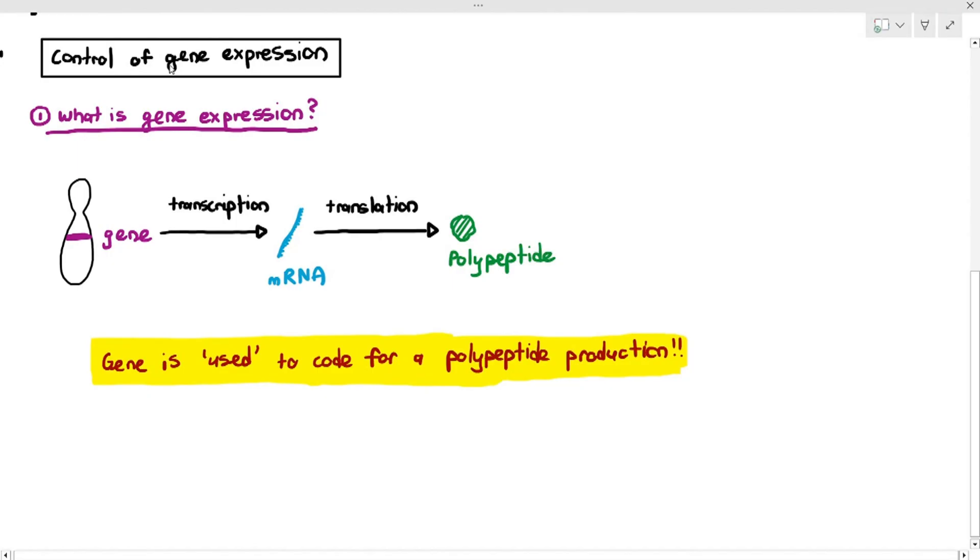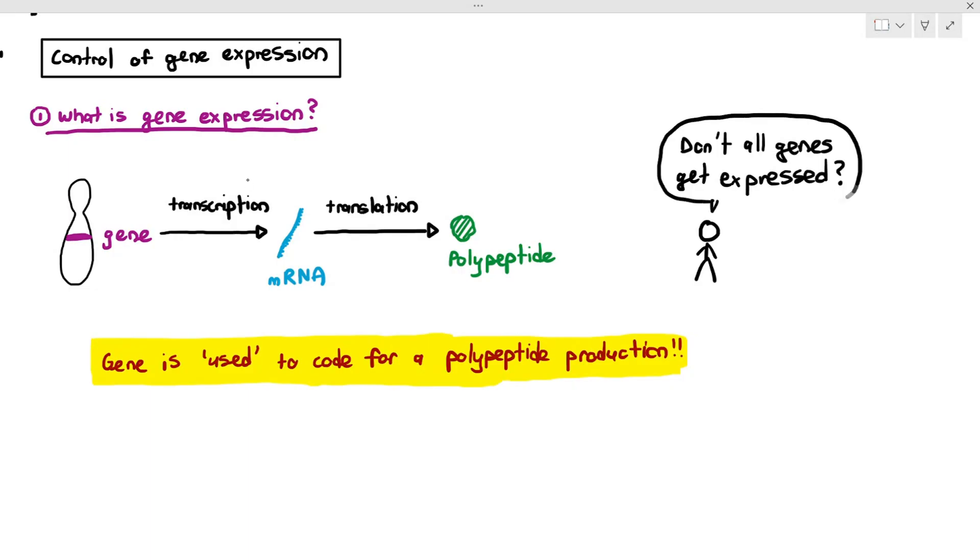Now, two questions have been asked by my students. Why can't we just say the gene undergoes transcription and mRNA undergoes translation? Why do we have to use a different language? Why do we have to say the word gene expression? And the second question that students will ask is, why do we even have to talk about this? Because don't all genes automatically get expressed?